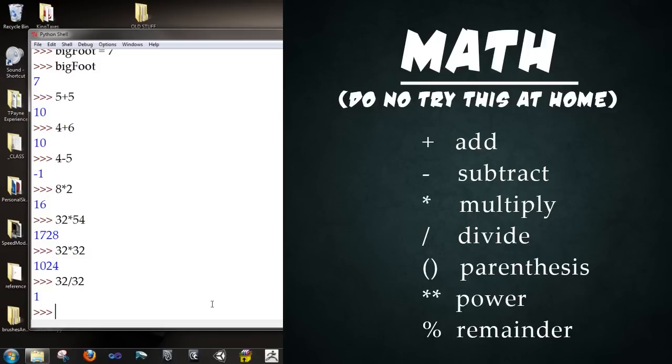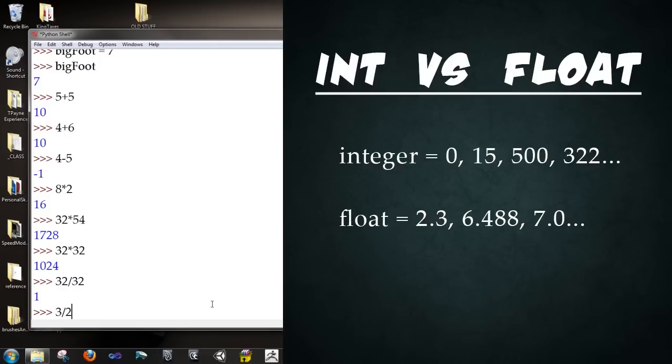Now we're going to get into something that is very important. What I want you to do now is type in 3 divided by 2. What do you think is going to happen? Alright. 3 divided by 2, if you were to punch it into a calculator, would be 1.5. But here, it punched out 1. It returned a value of 1. Now what's going on is it's interpreting the values as integer values. Integers are simply numbers without decimal points. They're whole numbers. Floating values or floating point values are numbers that have a decimal point somewhere in the value. Thus, the name floating point is that dot can be anywhere in the value.